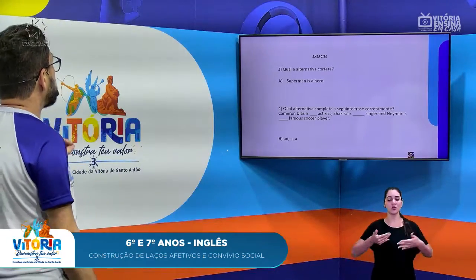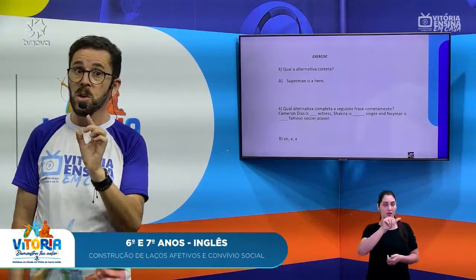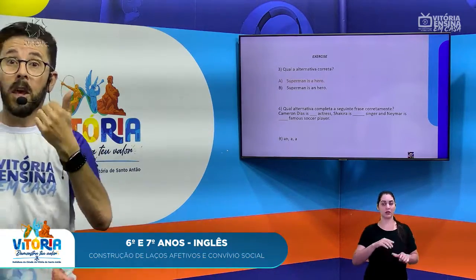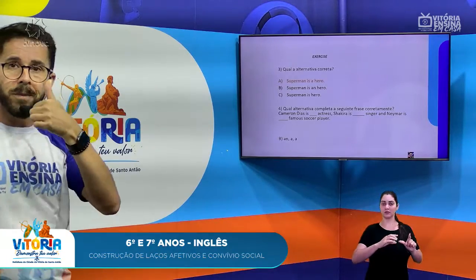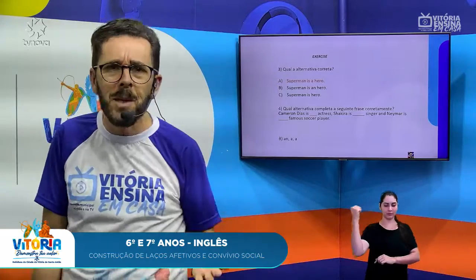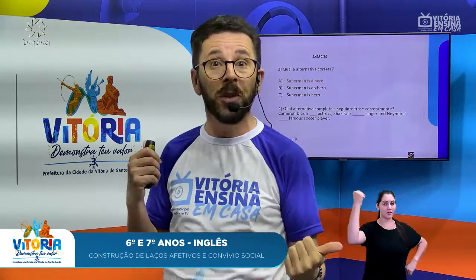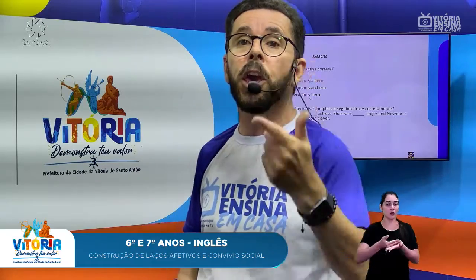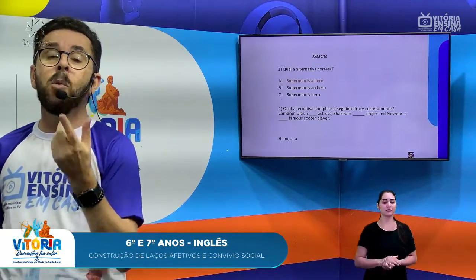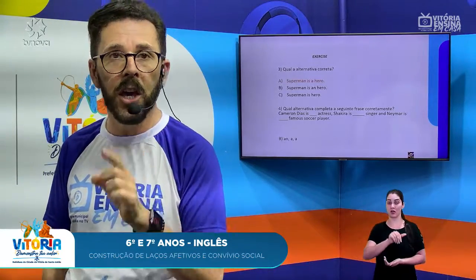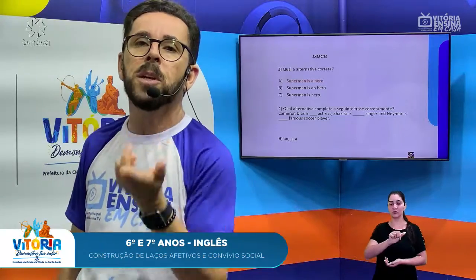Qual a alternativa correta? Letra A: "Superman is a hero." Letra B: "Superman is an hero." Quero mostrar a palavra "hero". Em inglês, a maioria das palavras com H tem som de R — "hero". O H é pronunciado. Se o H é pronunciado, eu vou usar o artigo indefinido "a": "a hero", e não "an hero". Por isso, a alternativa certa é a alternativa A.